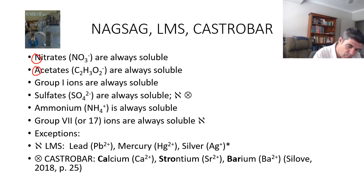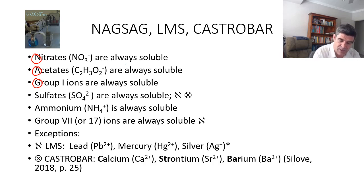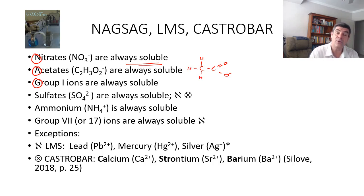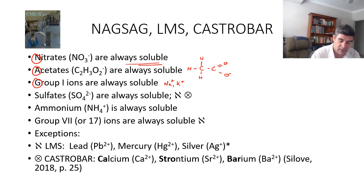NAGSAG stands for Nitrates, Acetates, Group 1 ions — and we used two of those already. All nitrates are soluble. Acetates are the ion with two carbons, a double-bonded oxygen and an O-minus, which is the anion of acetic acid or ethanoic acid — they're always soluble. The group 1 ions — sodium, lithium, potassium, etc. — are always soluble. The SAG part stands for Sulphates, Ammonium, and Group 7.